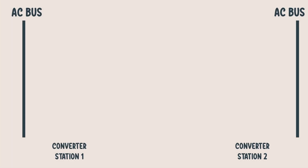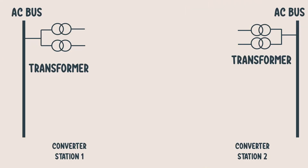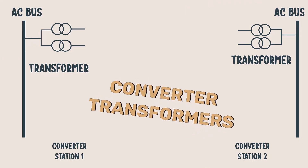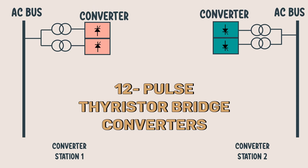As we already know, we have transformers and converters present inside these stations. This transformer is not the same transformer that we use in our AC system. These transformers are called converter transformers, and are specially designed to withstand the current harmonics caused by the power electronic converters. 12-pulse thyristor bridge converters are usually used in HVDC transmission.